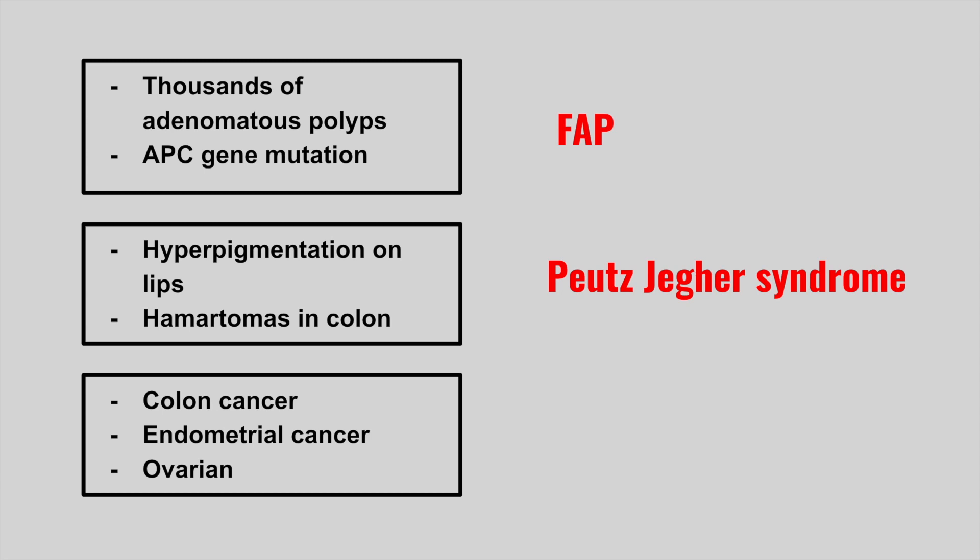The next patient has associated risks of colon cancer, endometrial cancer, and ovarian cancer — this is Lynch syndrome, also called hereditary non-polyposis colorectal cancer. This is often compared to FAP. Lynch syndrome has a few polyps in the colon while FAP has far more, but both are genetic and highly tested against each other.